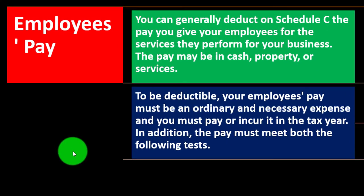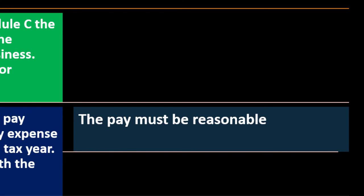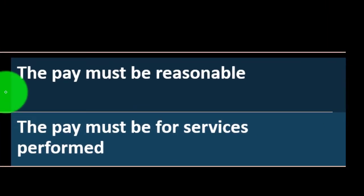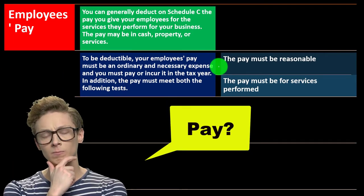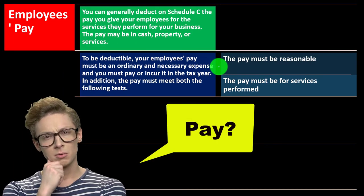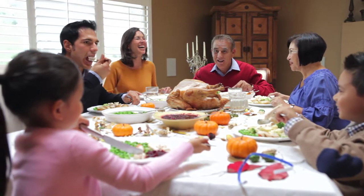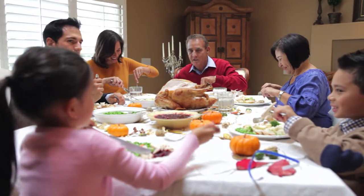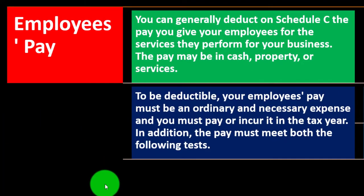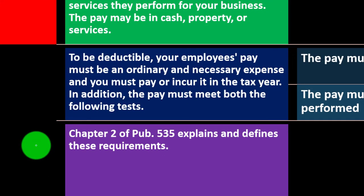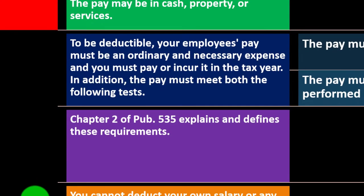To be deductible, your employees' pay must be an ordinary and necessary expense — that's the normal rule — and you must pay or incur it in the tax year. In addition, the pay must meet both of the following tests: the pay must be reasonable, and the pay must be for services performed. This is generally straightforward unless relatives are involved, where payments might be unreasonable as people try to gain a tax benefit. For more detail, chapter two of Publication 535 explains and defines these requirements.